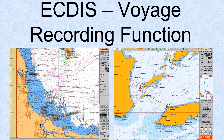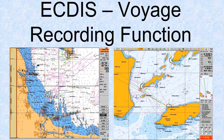So the voyage recording function in the ECDIS is the capability of the ECDIS to store and reproduce certain elements required to reconstruct the navigation voyage and verify the official database used during the last 12 hours. This function is separate from the voyage data recorder, the VDR, which is also known as the maritime black box.